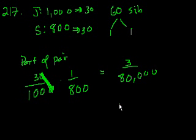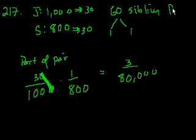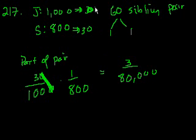I reread the question and now I realize the error in my logic. I misread it — I said there are 60 siblings, but no, there are 60 sibling pairs. That means there are 120 siblings total, and in each class there aren't 30 but 60 members of a sibling group.